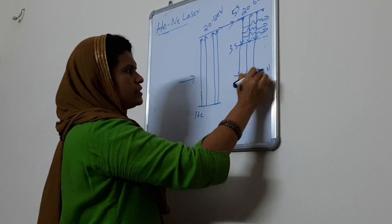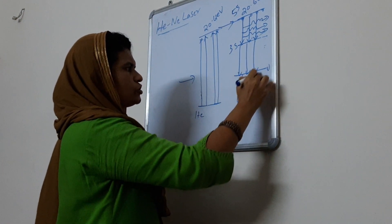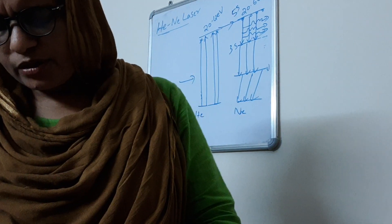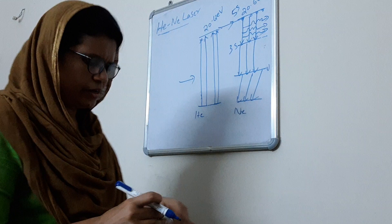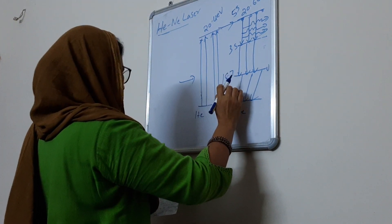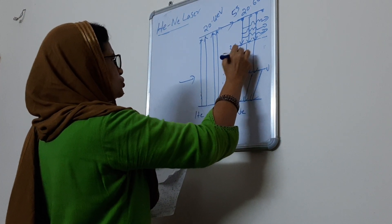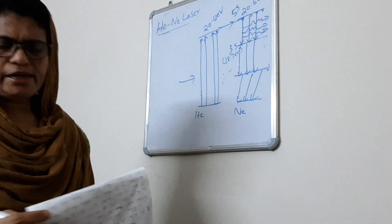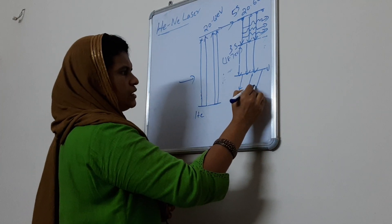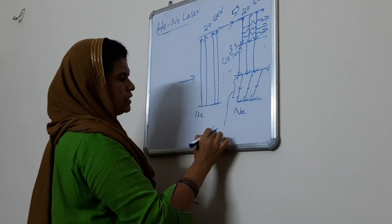That is an intermediate stage. That is an unstable stage and it eventually comes to the ground stage. In the energy level, this is equal to 18.7 electron volts. This state is 18.7 electron volts. And this is the radiation-less transfer. This transfer is called radiation-less transfer.